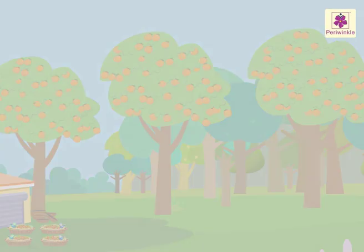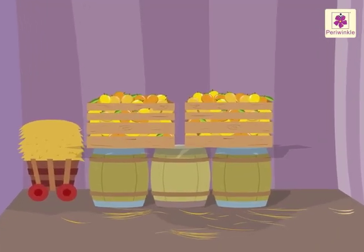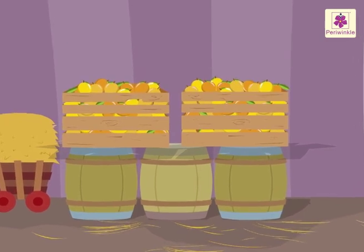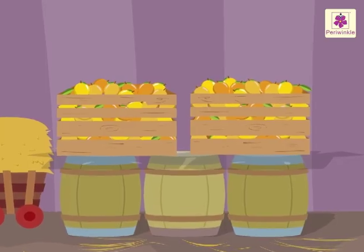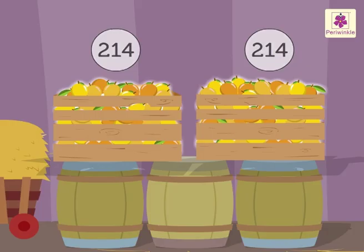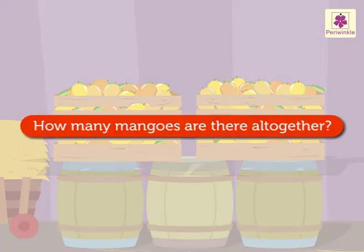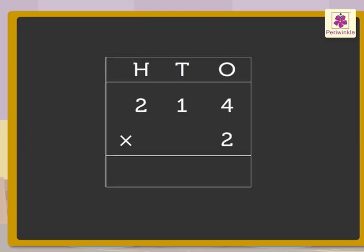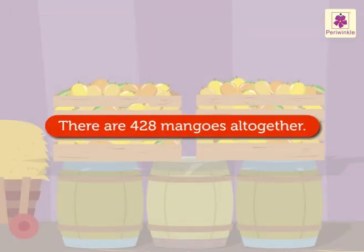Let's have them! Friends, presenting the king of all fruits — yes, you have guessed it right: two boxes of mangoes! Each box contains 214 mangoes. How many mangoes are there altogether? Let's multiply the digits. 4 into 2 is equal to 8. 1 into 2 is equal to 2. 2 into 2 is equal to 4. Fantastic! There are 428 mangoes altogether.